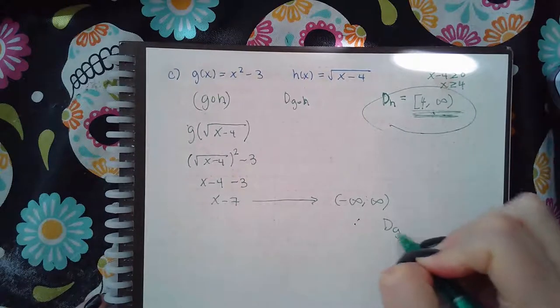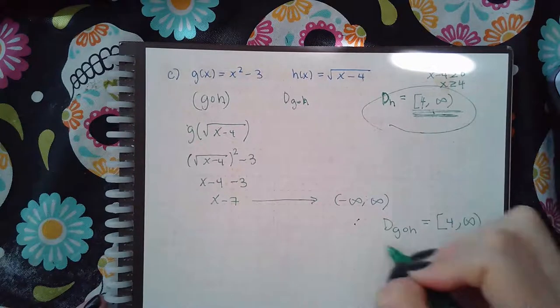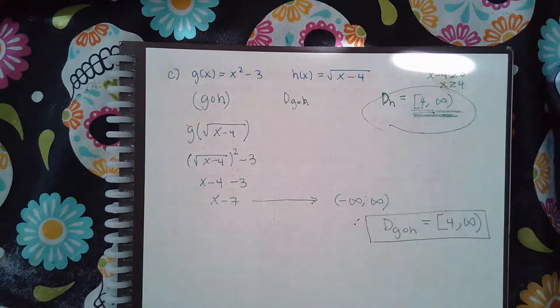So the domain of g of h, sorry, is going to be 4 to infinity. Okay? I'm going to go over that logic again one more time.